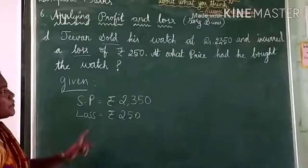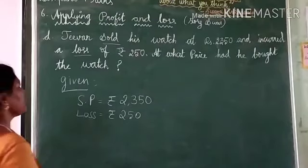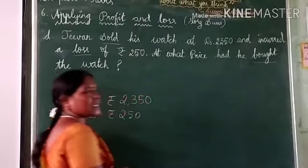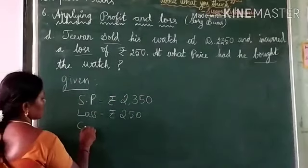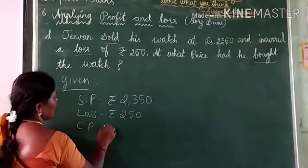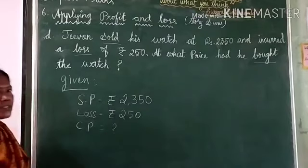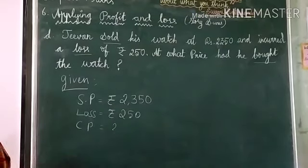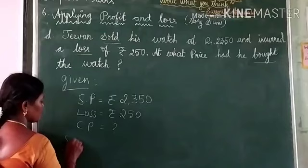Then at what price did he buy? Buying means cost price. So cost price we have to find out — we don't know it. Now we have to find out the cost price. So come to the solution.